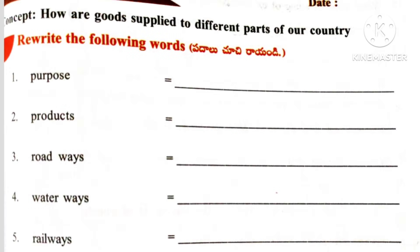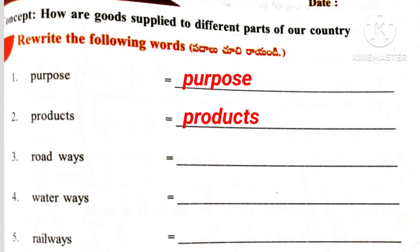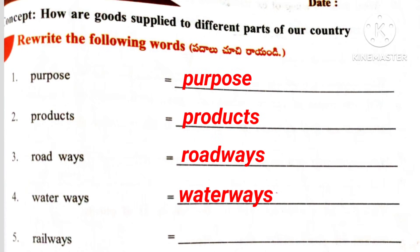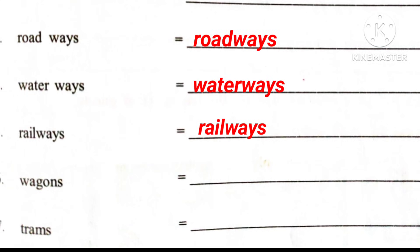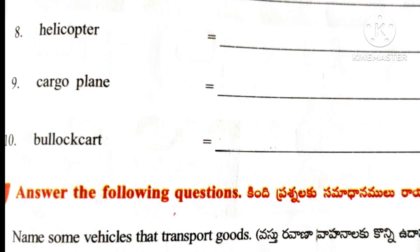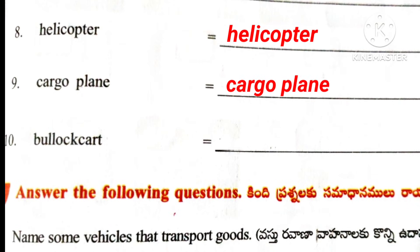Worksheet 4, Roman number 1. Rewrite the following words: Purpose, Products, Roadways, Waterways, Railways, Wagons, Trams, Helicopter, Cargo plane, and Bullock cart.